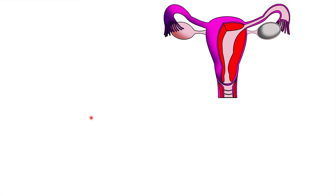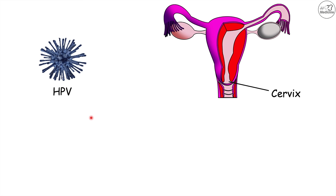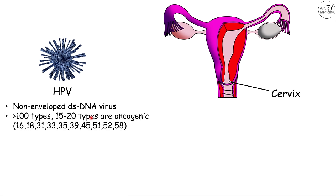Now let's talk about the pathophysiology behind cervical cancer. Almost all cases are caused by HPV, a non-enveloped double-stranded DNA virus. There are more than 100 types, but only 15 to 20 are oncogenic. The most common oncogenic types include 16, 18, 31, 33, 35, 39, 45, 51, 52, and 58.